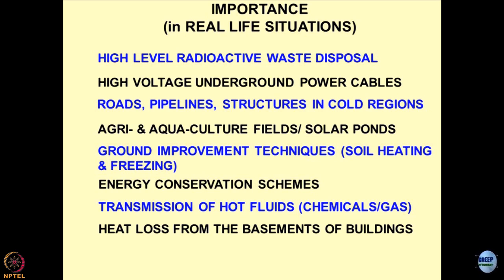Transmission of hot fluids — most of the time transmission is done underground. Similar to the situation with power cables, this could be an air conditioning duct or chemicals going into or coming out of an industry. Under all circumstances, you want to minimize heat losses. A good example would be pipelines where you may have to do thermal insulation so that cavitation does not occur in the pipeline.